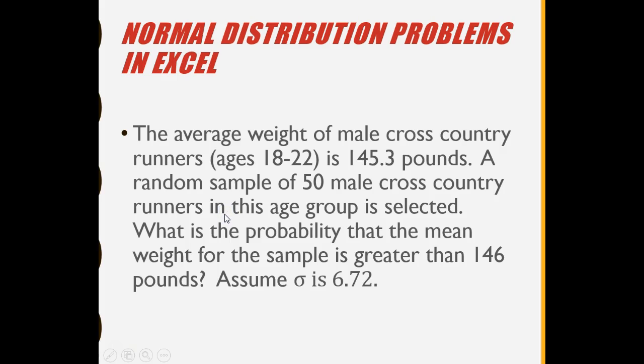Let's say we have a situation where we have a population of male cross-country runners ages 18 to 22 and we know their mean weight is 145.3 pounds. We take a random sample of 50 of these cross-country runners in the age group. We want to know the probability that the mean weight for the sample of 50 is greater than 146. They also tell us to assume the population standard deviation is 6.72.